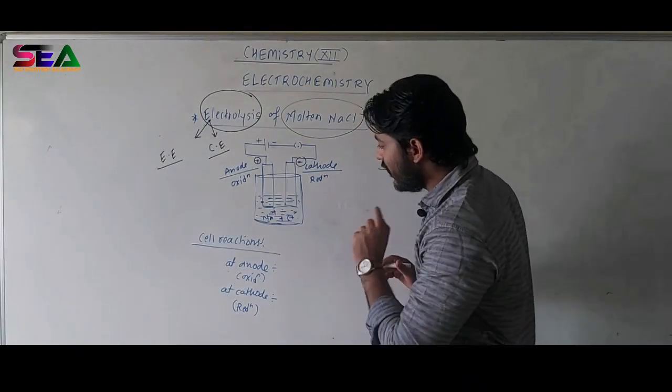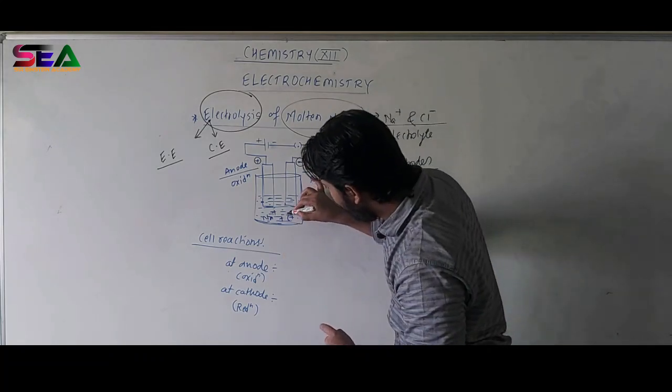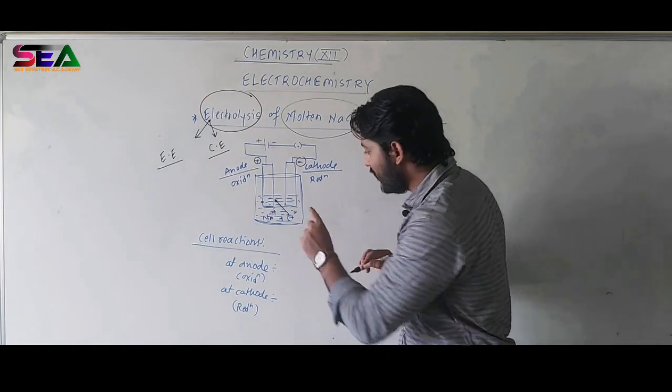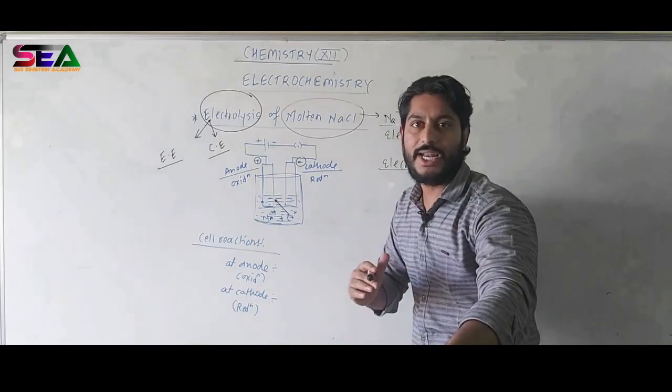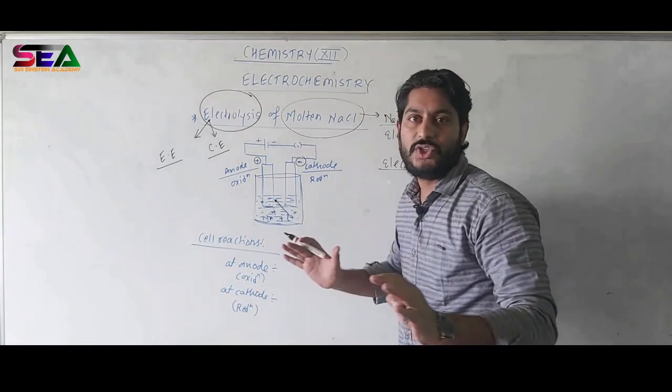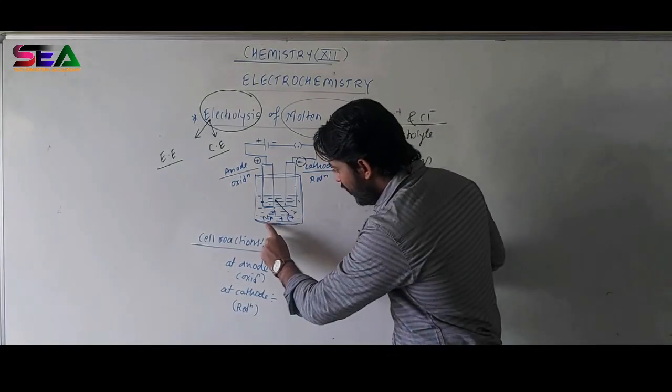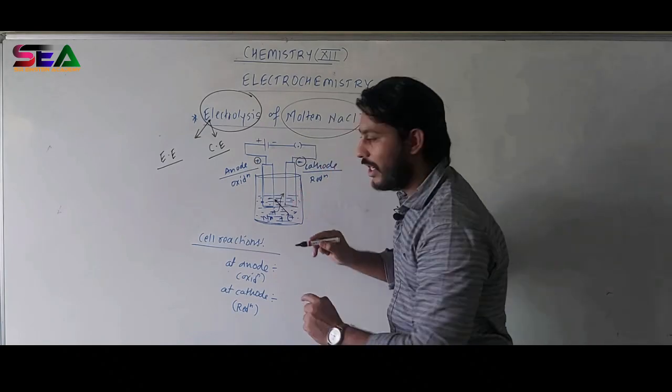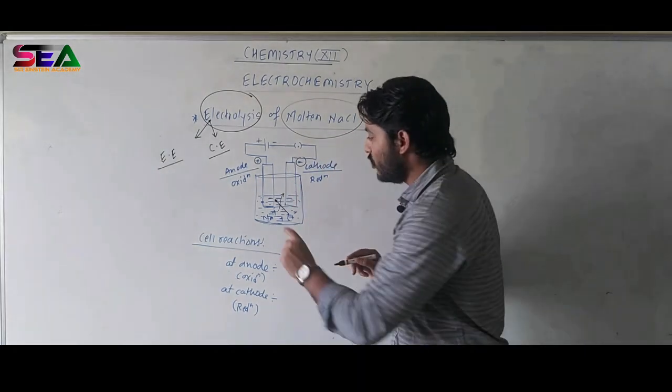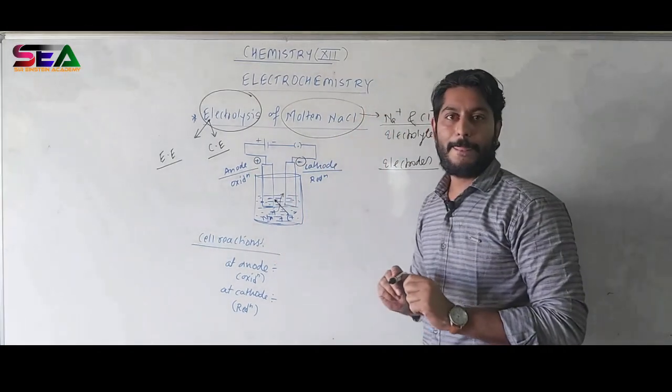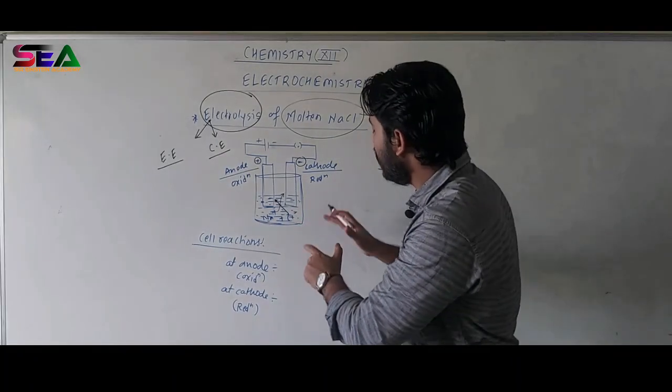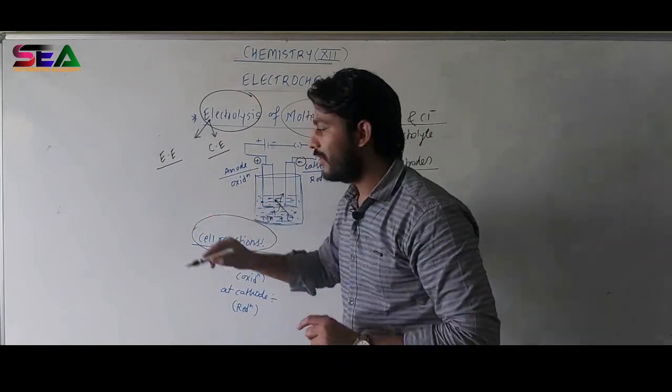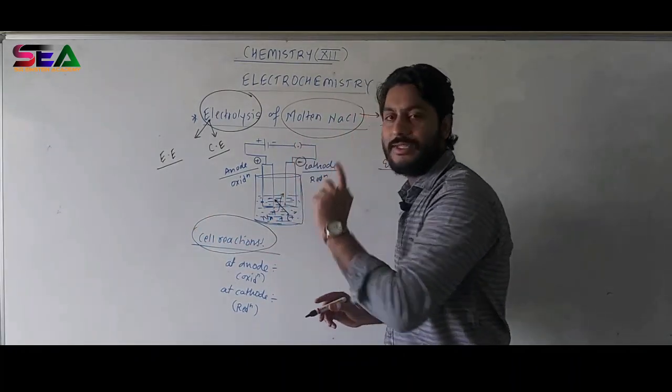So, now let's see what is going to happen. This chloride will try to attract towards anode for the sake of oxidation. As it is electron rich, it will lose electron and it will become discharged. The same Na+ will try to attract towards cathode where it is negatively charged and it will reduce so as to become discharged. And this particular migration or this particular moment is nothing but cell reactions which is occurring inside the cell.